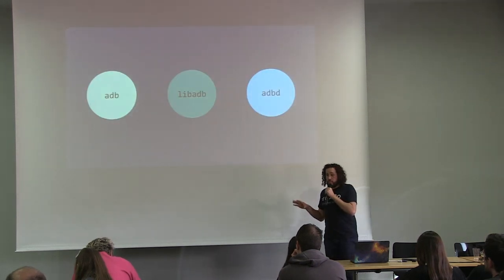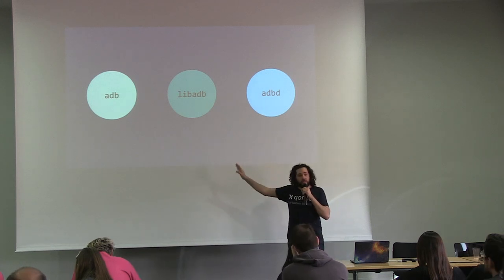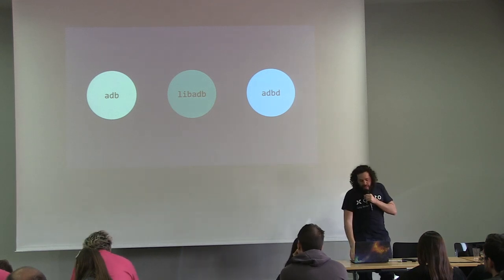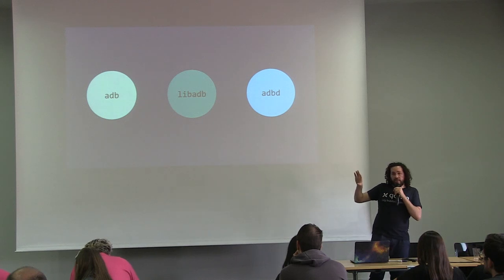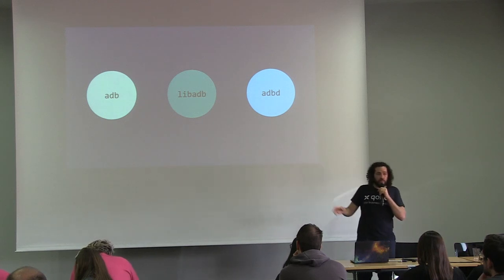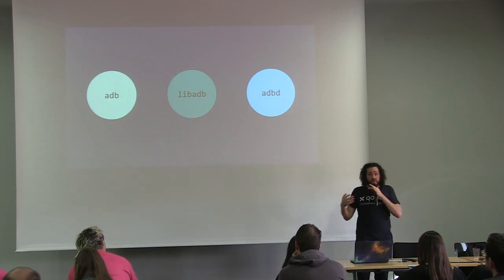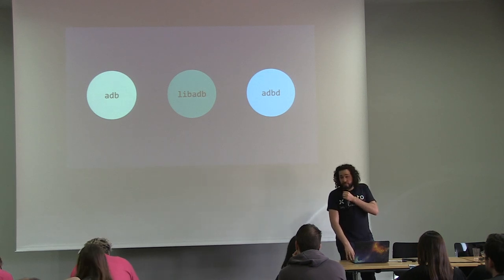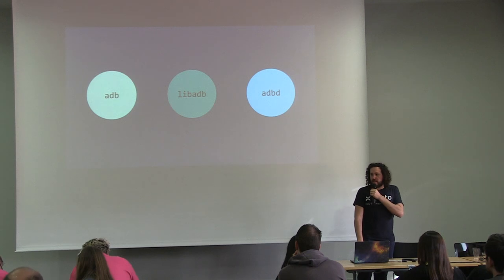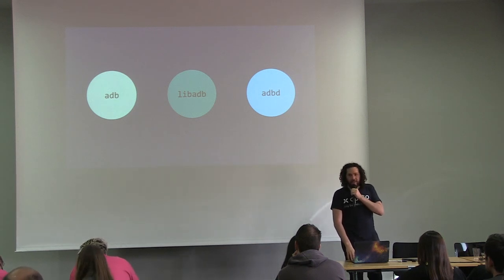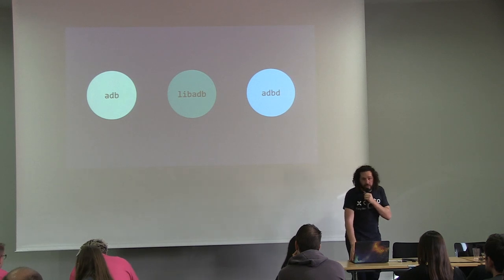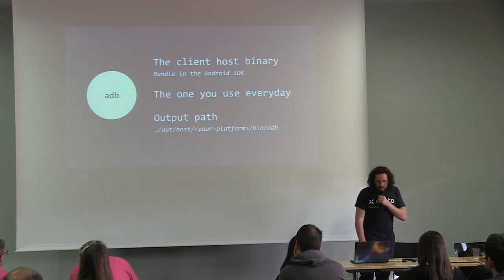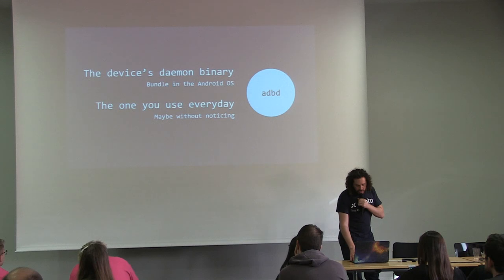This build produces two things: the ADB client you're using, and the ADB daemon running on the device. Both binaries share a static library called `libADB`, so they share a lot of code. When you start reading the ADB source code, this can lead to some strange code and brain-bending moments to understand what's happening.